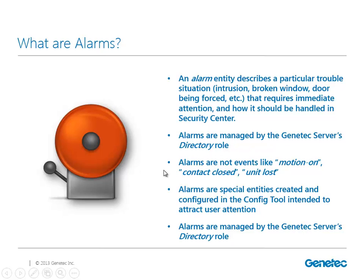It's also very important to understand that alarms are not events. For example, motion on, close contact, or unit loss — those are basically events that happen within the system. We can have a camera with motion detection enabled, and motion on will be an event within that camera entity. But an alarm is an entity that is being triggered by some of those events. So we can have an alarm triggered by the event motion on on the camera. Alarms are special entities created to attract the user's attention.